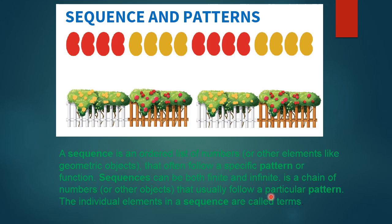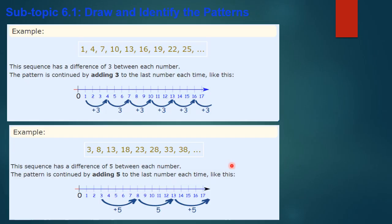Let's go further to look at some activities and examples. The subtopic is 'draw and identify the patterns.' Example number one: the numbers given are 1, 4, 7, 10, 13, 16, 19, 22, and 25. We want to find the next number after 25. First, we need to check out the pattern in this sequence — after 1, four is coming; after 4, seven is coming; after 7, ten is coming.